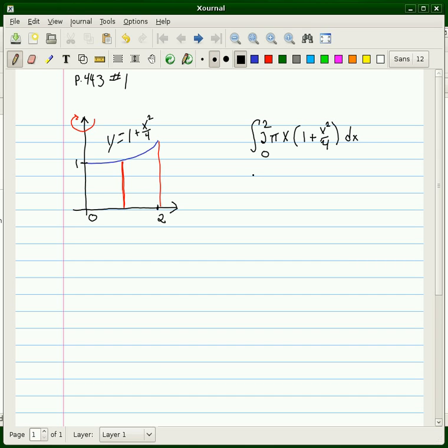Factor out the 2π, distribute the x, and get x plus x cubed over 4.